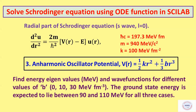First, the case of the anharmonic oscillator. Here the potential is given by half k r squared plus one-third b r cubed, and we have to solve the Schrödinger equation for different values of the anharmonicity constant B. In this case, the energy will be in MeV (mega electron volts) and the distance will be in femtometers. We will continue from where we left off in the previous video.